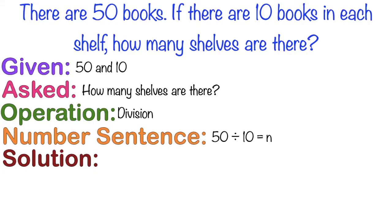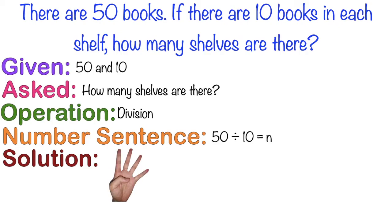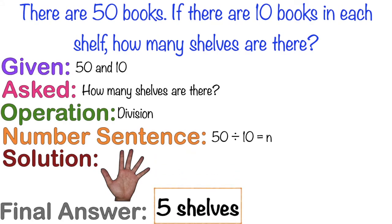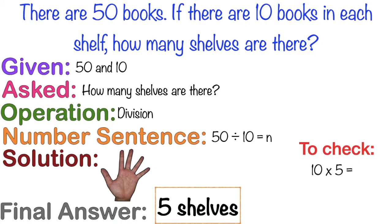For the solution, let's use skip counting by 10 until we reach 50. Let's do it together: 10, 20, 30, 40, 50. So 50 divided by 10 equals 5. The final answer is 5 shelves. To check, let's multiply the divisor and the quotient: 10 times 5 equals 50. Since our product and dividend are both 50, that means our answer is correct.